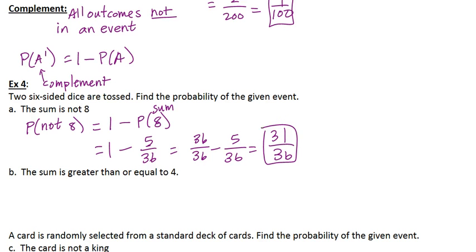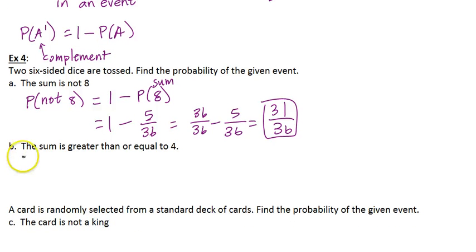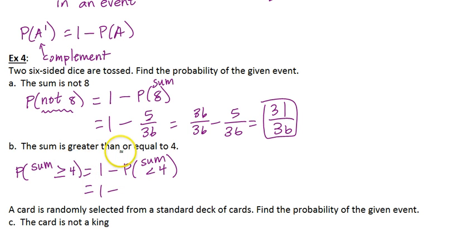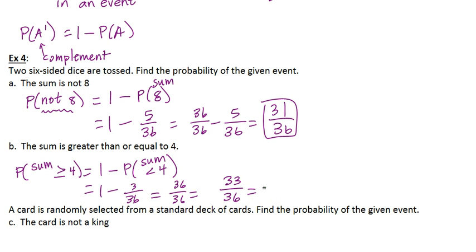Part B: the sum is greater than or equal to 4. I'm going to take the complement by finding the opposite — a sum less than 4 — and subtract that off. How many outcomes have a sum less than 4? There are only 3: (1,1), (1,2), (2,1). Think 36 over 36 for 1. So 33 out of 36 are greater than or equal to 4, which reduces to 11 over 12 for my final answer.